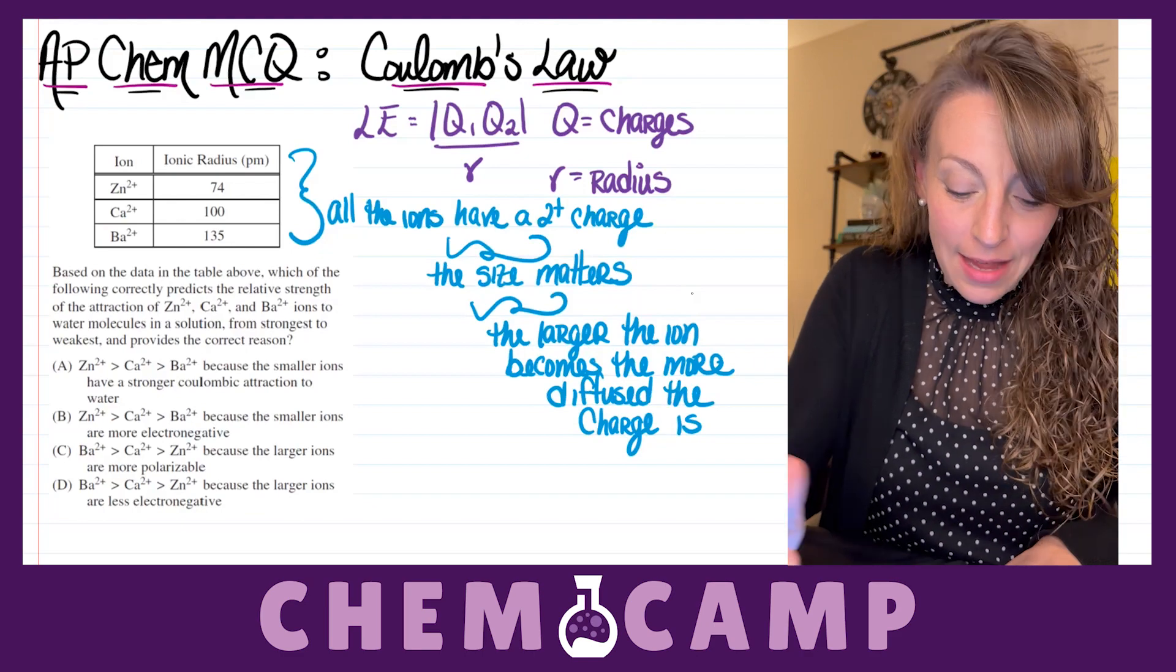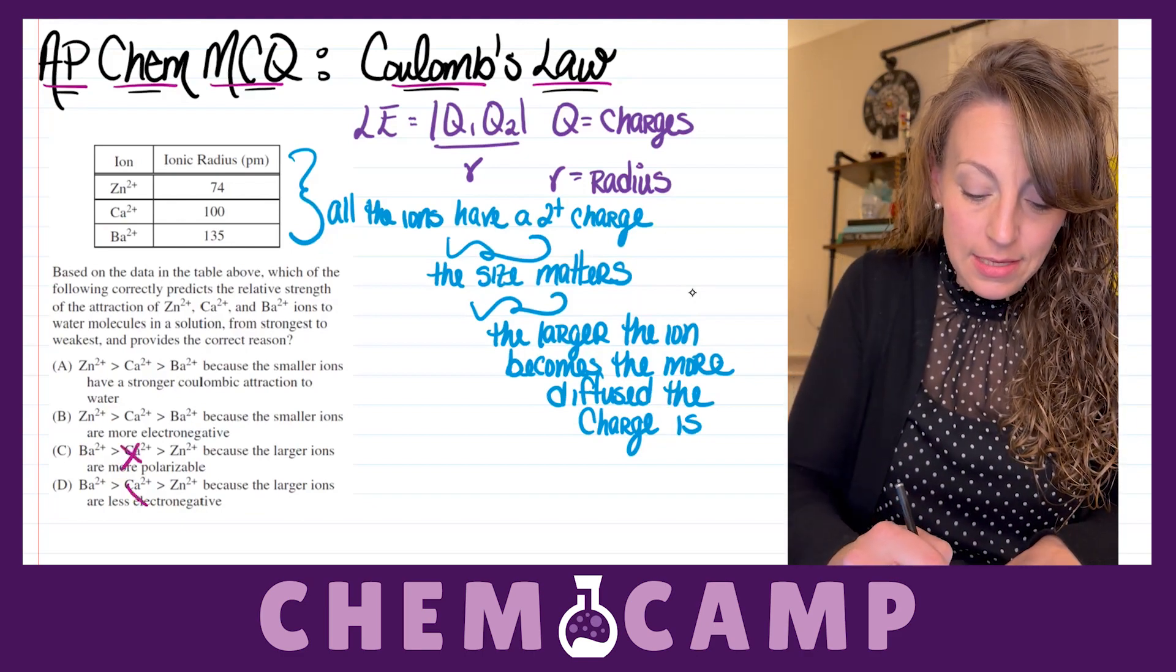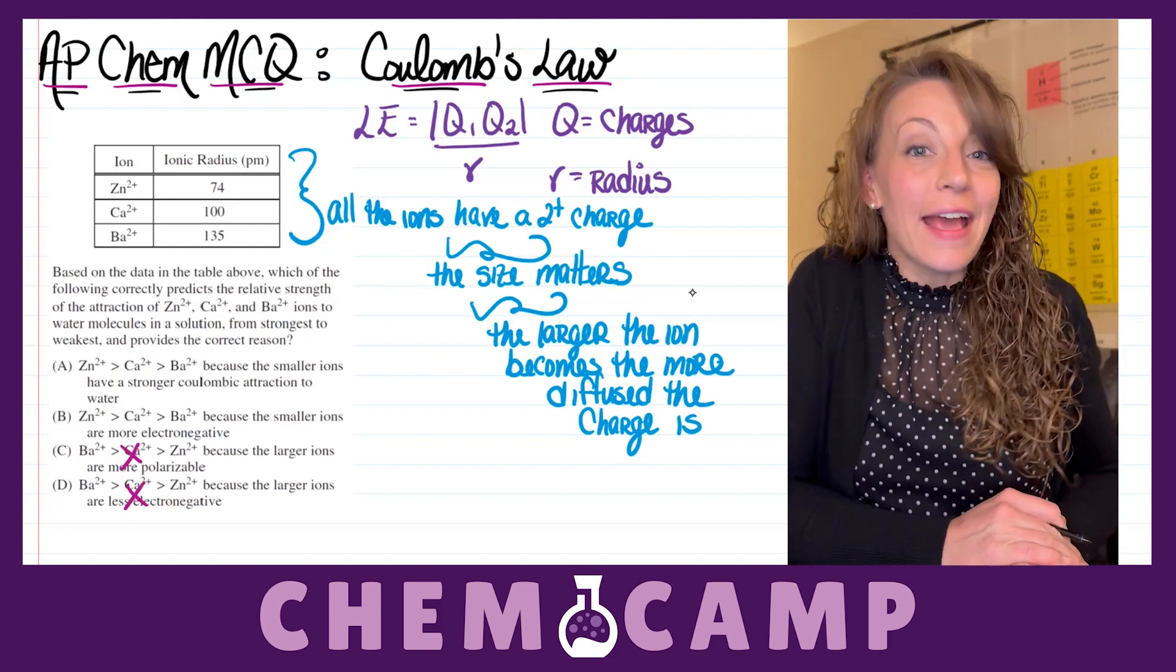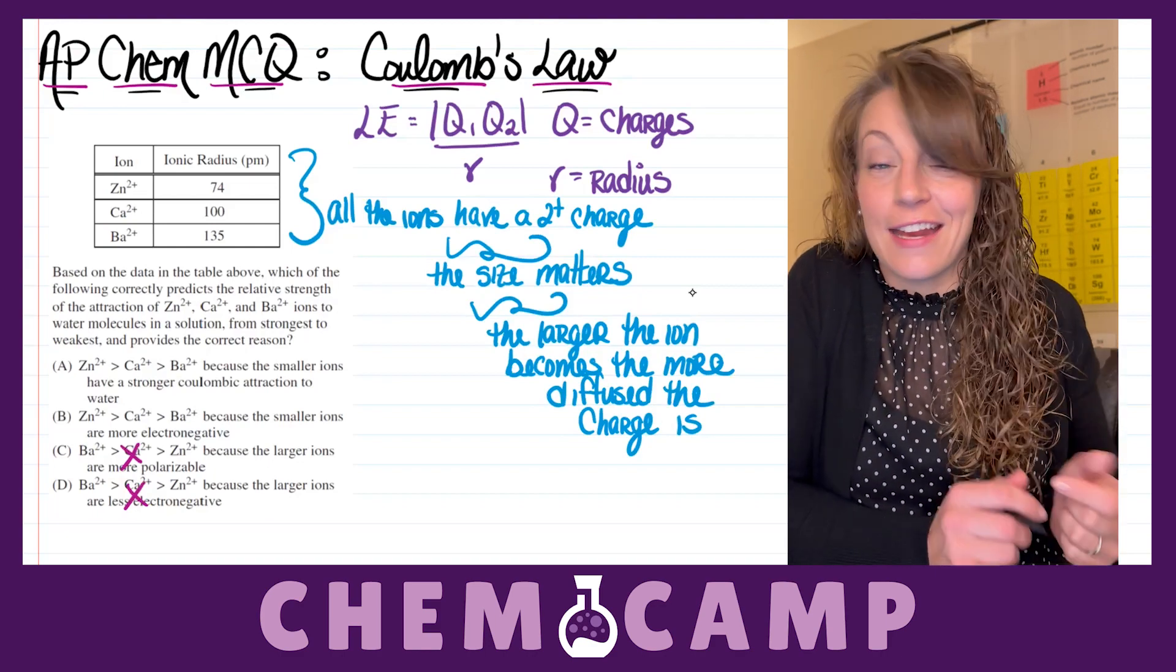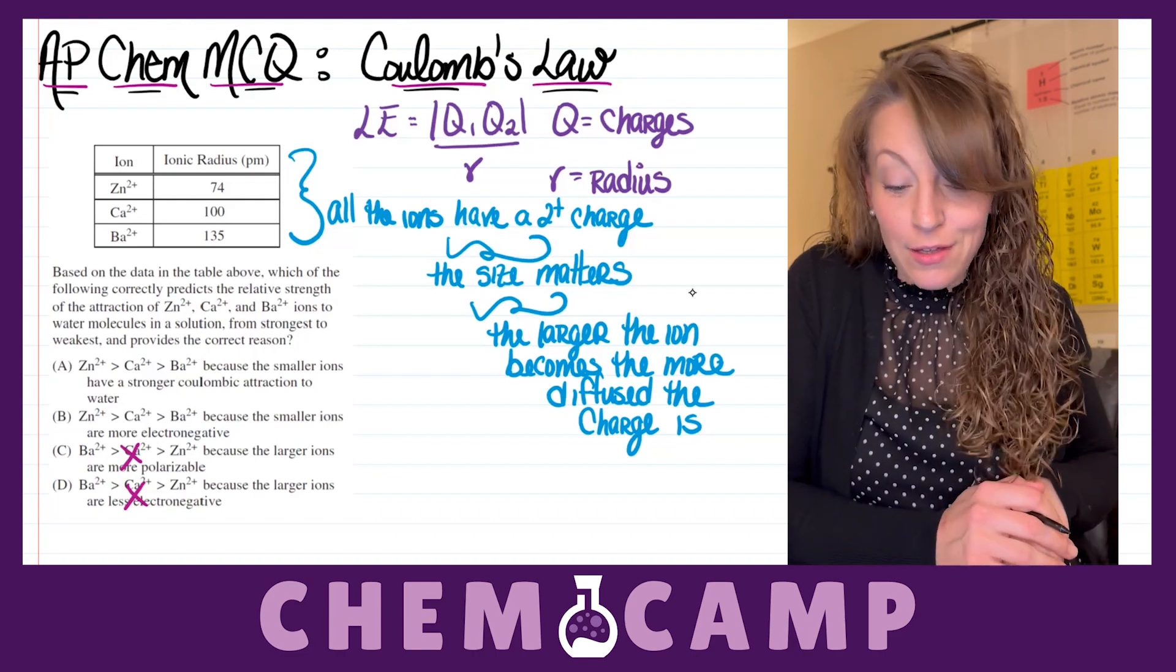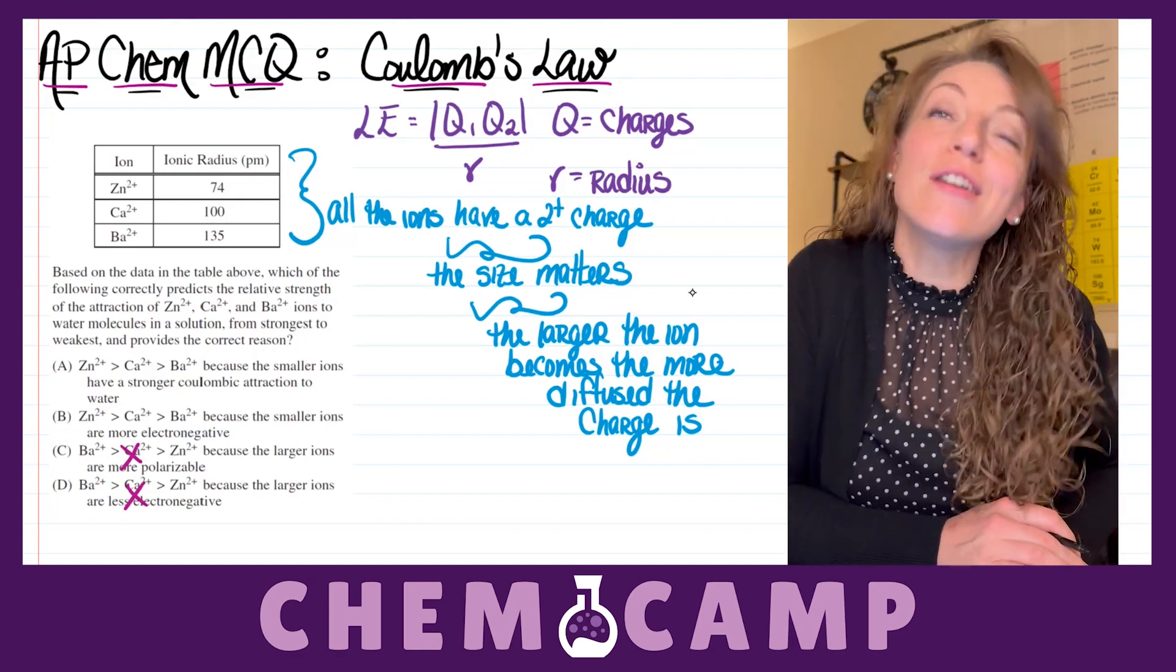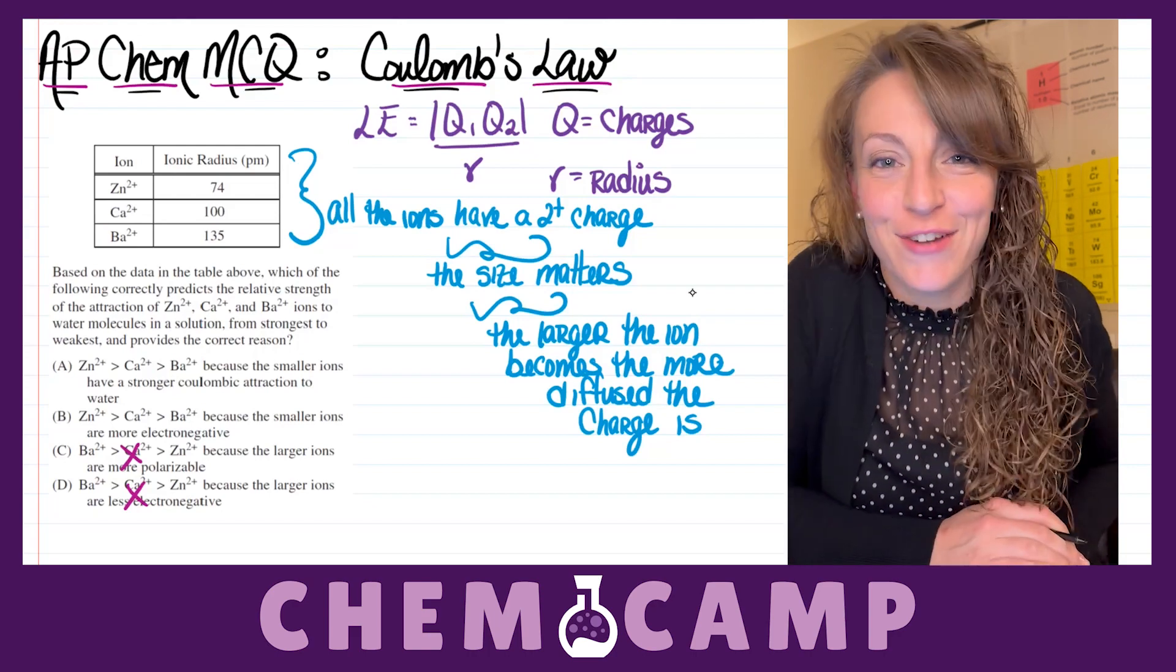So that means I can rule out letters C and D based on the ordering. That gives me a 50-50 shot at getting this one right. So letter A chooses that ordering because the smaller ions have stronger Coulombic attractions.